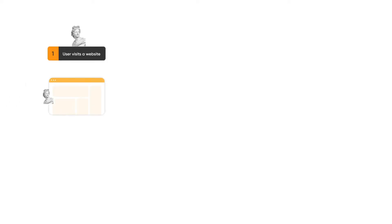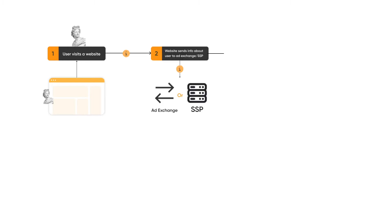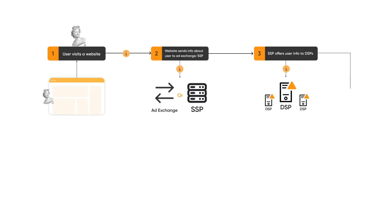SSPs worked together with another piece of ad tech — demand-side platforms, or DSPs, used by advertisers — based on the RTB protocol. An SSP receives a request from the user's browser when they visit the website and passes it to the DSP, enriching it with available user information.